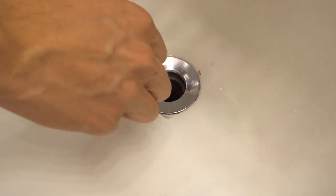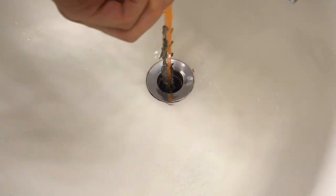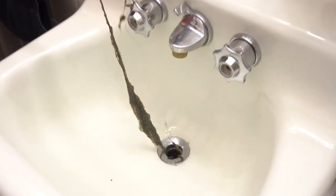As you push, you should feel it pass through the clog, then wiggle and turn the snake as you pull it back out slowly. That's the big clog that was causing the sink to back up.